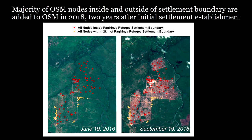Alongside refugee settlement boundary data from OSM, we've also gathered OSM nodes — clinics, health points, wash points, motorized boreholes, primary schools, and pre-primary schools. Our initial assessment looked at when these nodes get added to OSM, to see how much the timestamp lags behind what we see in satellite imagery. In the case of Pajrina, most nodes were added in 2018 — two years after we actually see this change on the landscape — which raises the question of how real-time OSM editing and contributions can complement our understandings of settlement expansion from satellite imagery.